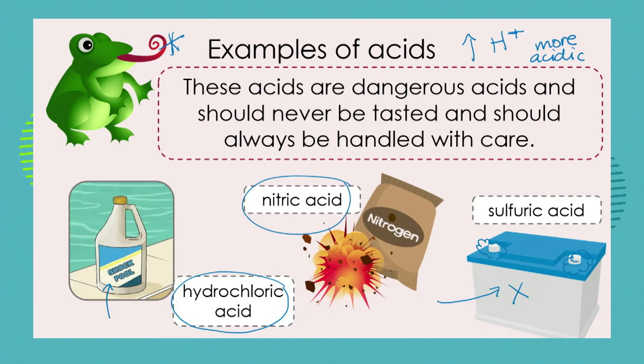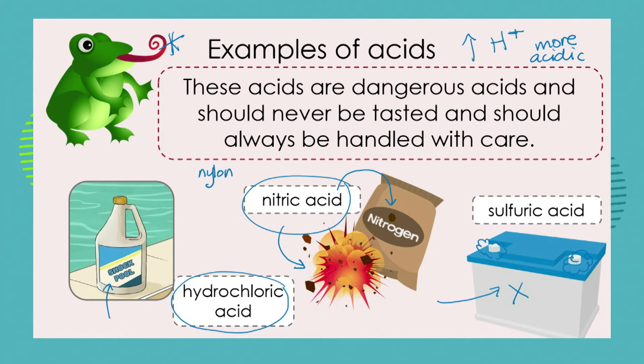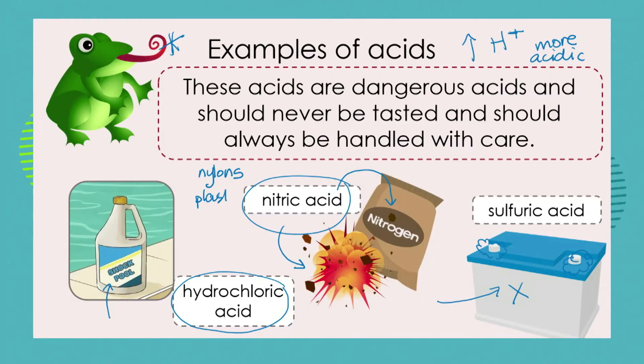Nitric acid is another extremely strong acid used in industry. We produce nitrogen-based fertilizers from nitric acid, and any explosive material is derived from it. Even products we use in clothing, like nylon, are derived from nitric acid, and many plastics are produced using it. When we put on stockings or t-shirts containing nylon, the nitric acid is no longer present in the fabric - we use the acid to make the substance, but it is not present in the final product.